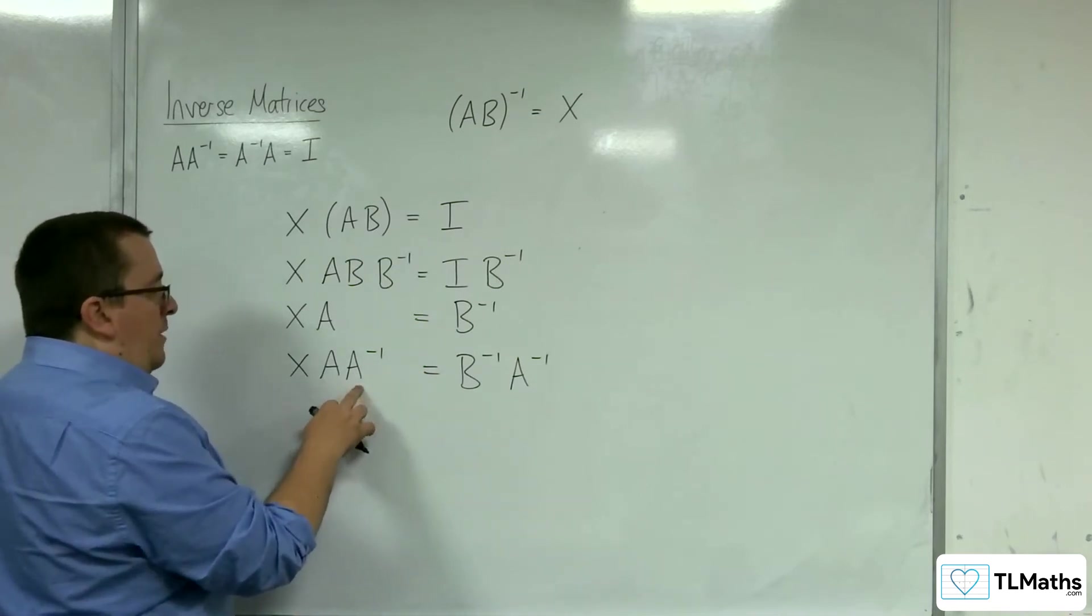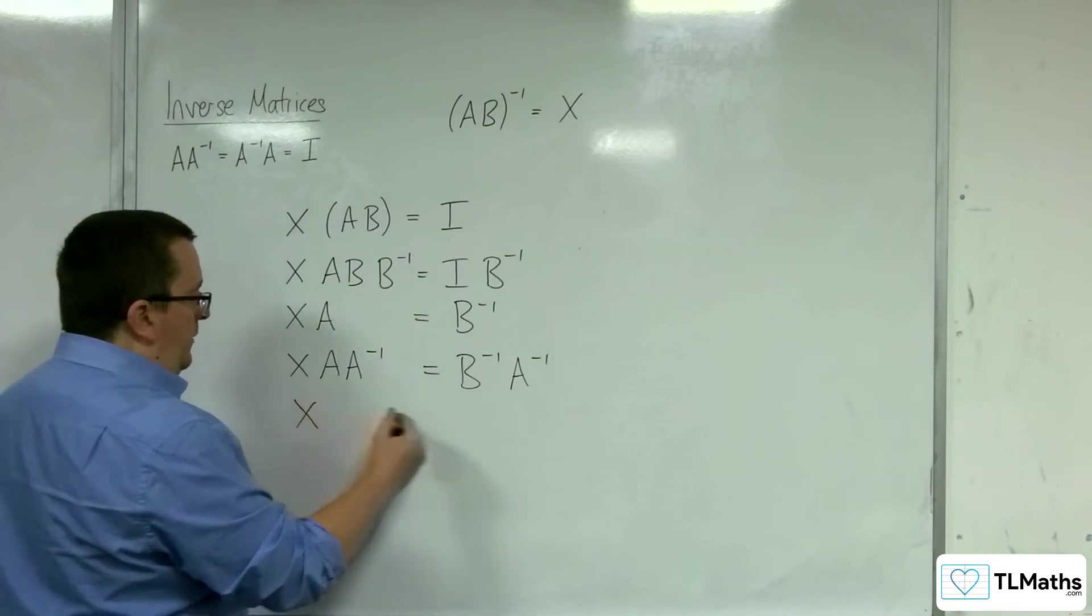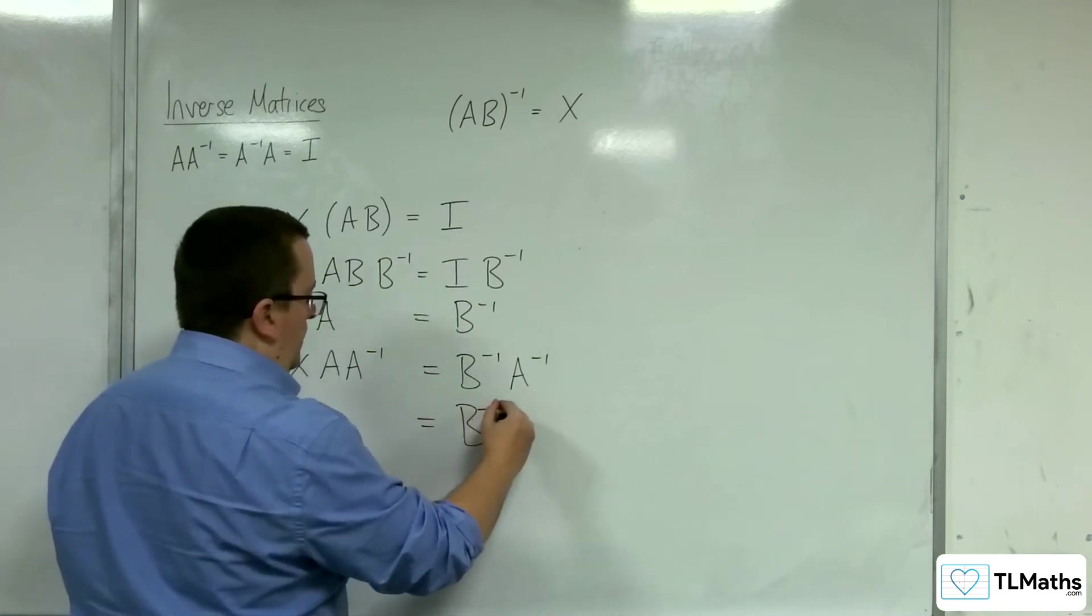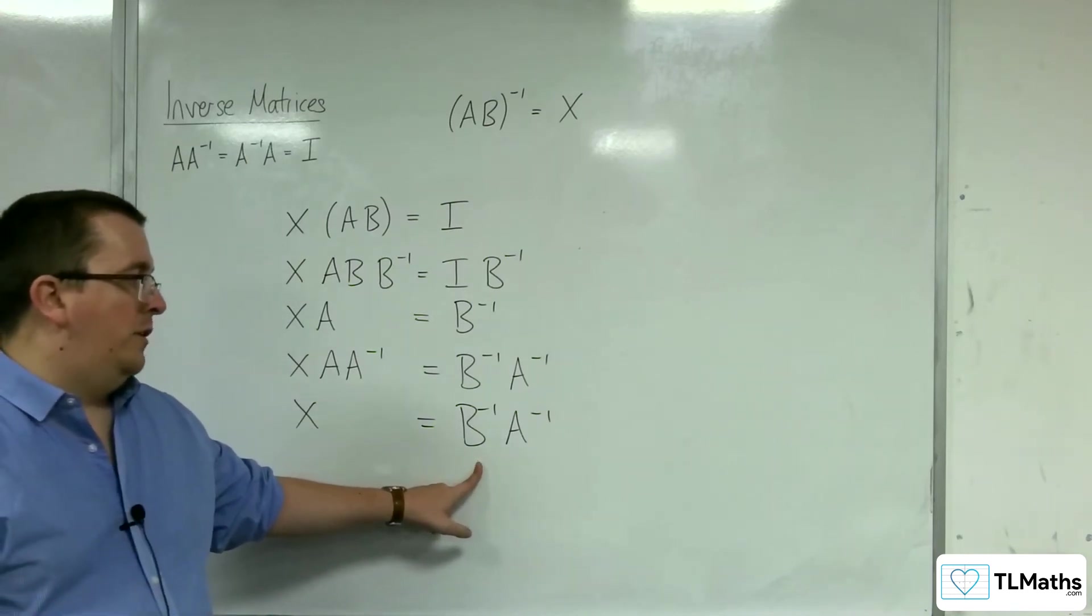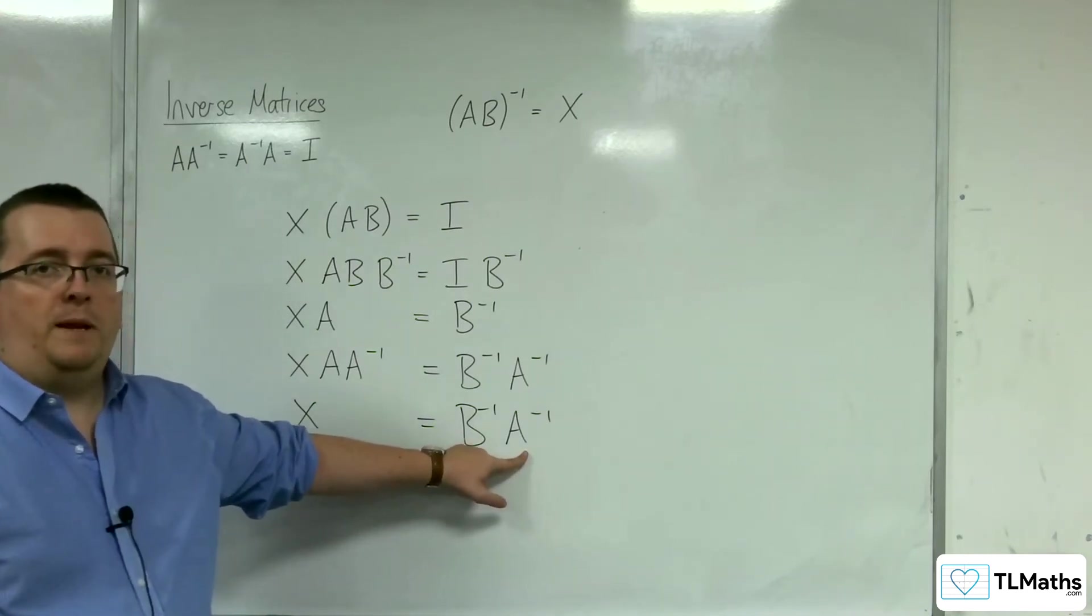On the left-hand side, we've got the A, A^(-1), which we know is the identity matrix. And so we have that X must be inverse matrix of B times inverse matrix of A.